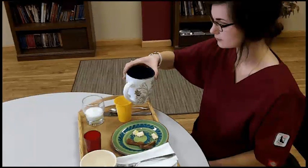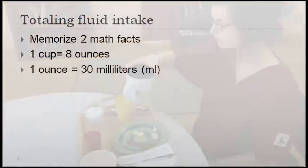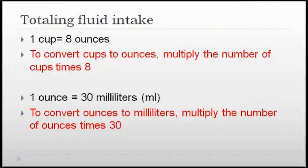Before we start figuring totals, let's review the basic facts you need to know to convert liquids into milliliters. Memorize these two facts: one cup equals eight ounces, and one ounce equals 30 milliliters.